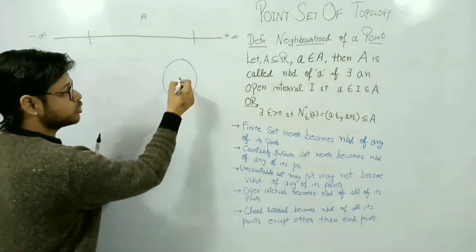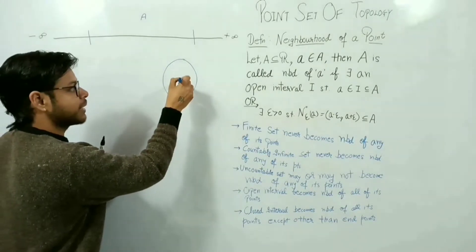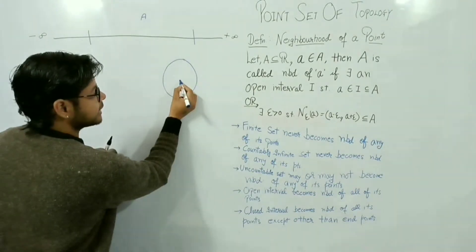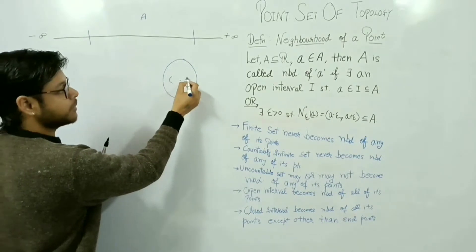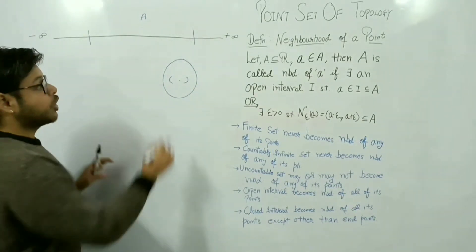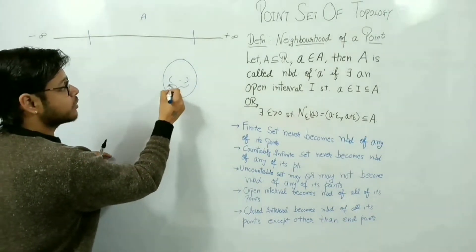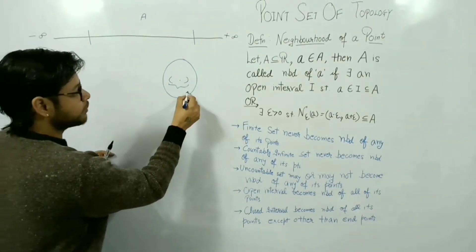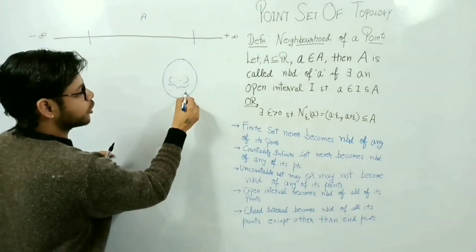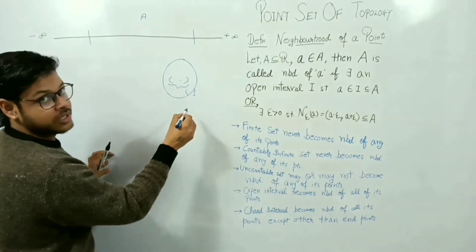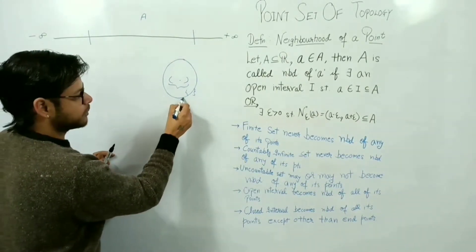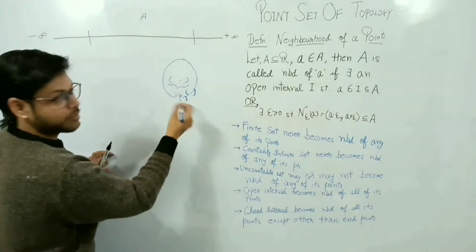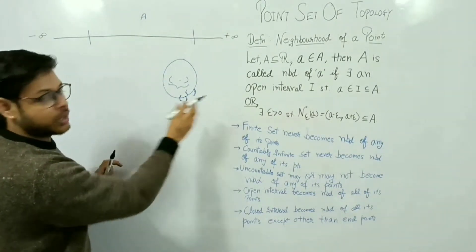I will check if it is a neighborhood of a point. What we see at this point is that there would be an open interval. If there is an open interval and the point is contained in that open interval which is a subset of A, then the condition is satisfied.